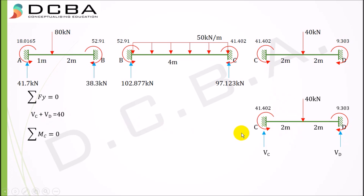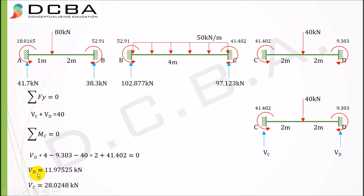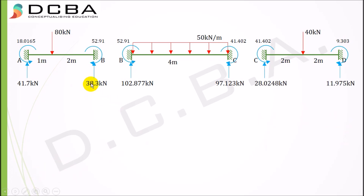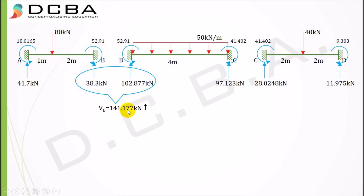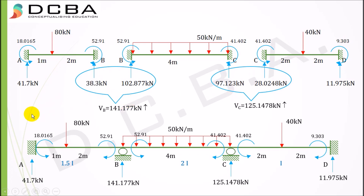Notice that we have two values for VB and two values for VC, because B and C are common points shared between adjacent segments. We need to add these reactions together. Summing the two VB values: VB = 38.3 + 102.877 = 141.177 kN. Summing the two VC values: VC = 97.123 + 28.0248 = 125.1478 kN. Now redrawing the beam, we have all reactions — including moments and vertical reactions at all supports — which is everything required to construct the shear force diagram.